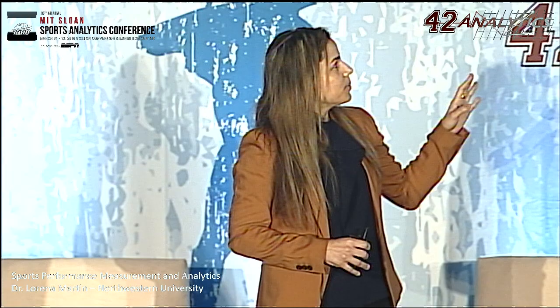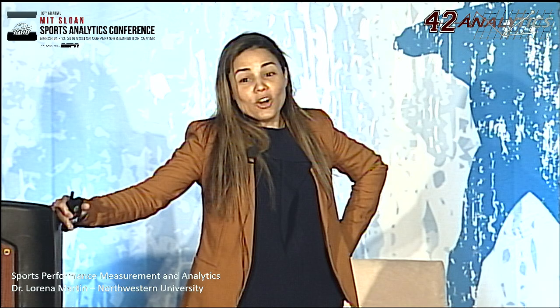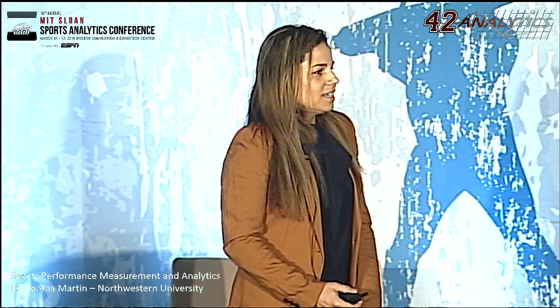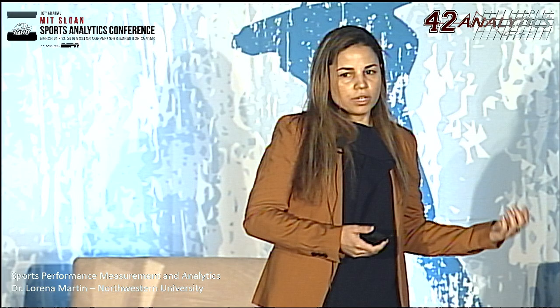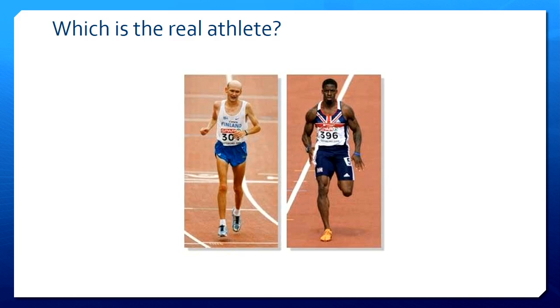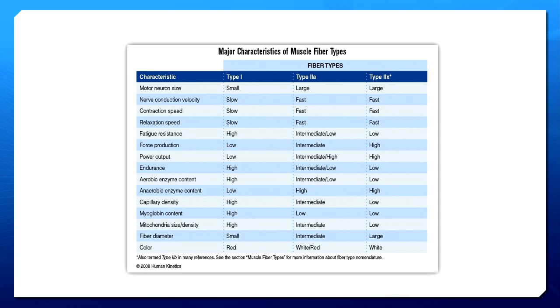So here we have two athletes. Which is the real athlete? Hopefully you'd all guess the right answer — they're both athletes, right? But they're very different by the sport they partake in and the type of training they're involved in. What makes them different? There's muscle fiber type distribution, which is somewhat genetic as well as dependent on the type of training. You've likely heard: are you type one or type two? Fast or slow twitch muscle? But typically you're not aware that there are seven to eight different types of muscle fibers. Some of them are hybrids, but for simplification purposes we've categorized them into really two.